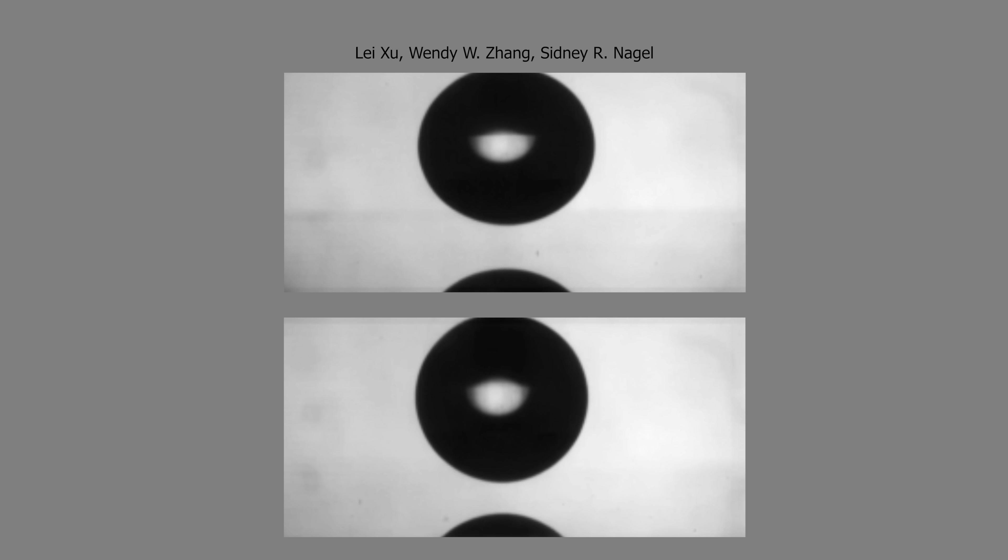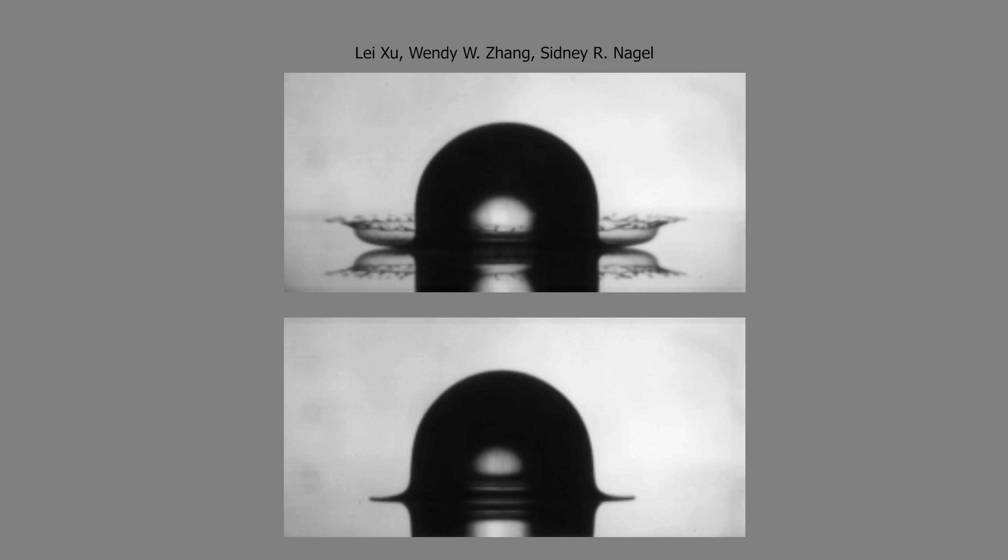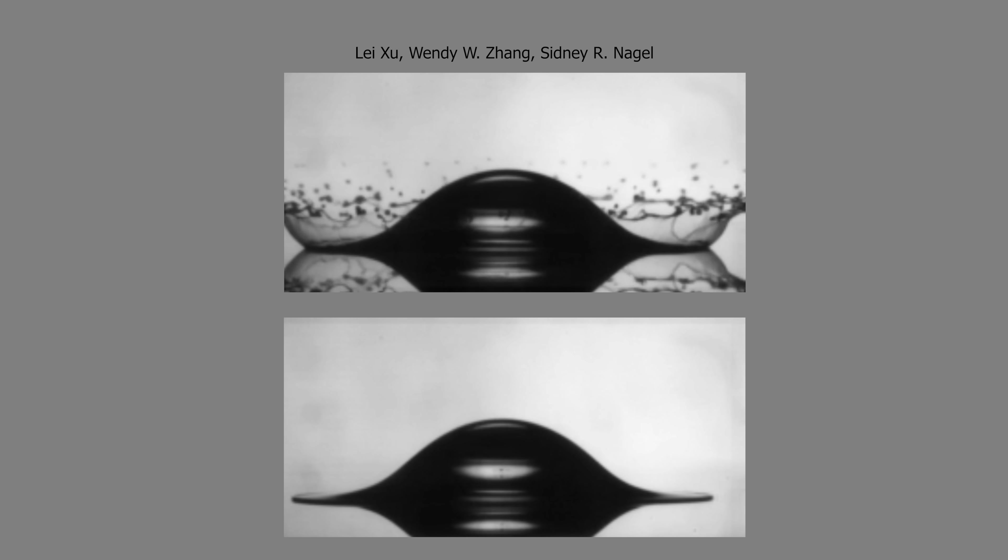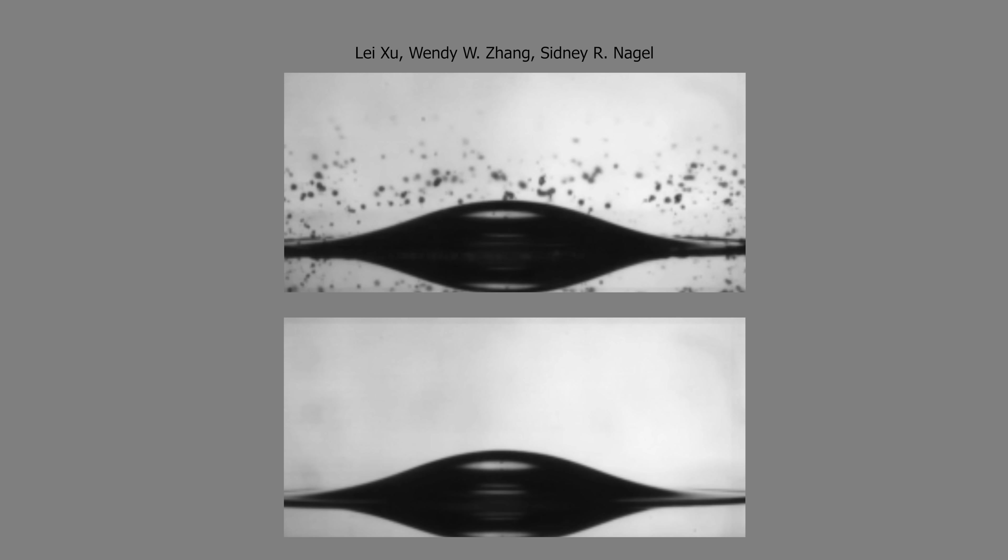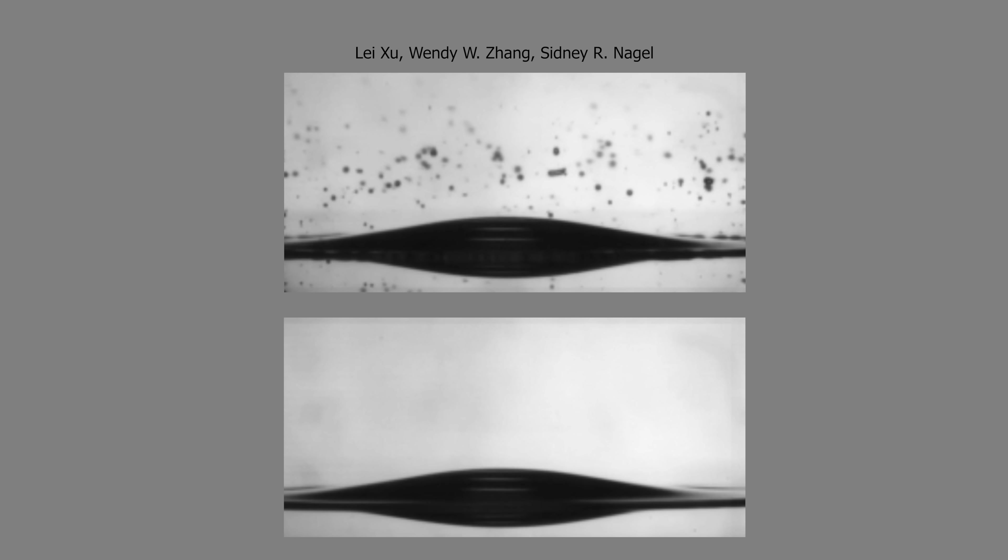But if you take away the air then you get no shockwave and no compressed air that flattens the splash out above the surface to throw the drops. So without air you just get the drop flattening out like a pancake. The rim of the droplet spreads smoothly and evenly outward. So splashing is not just a property of the liquid, it's a liquid gas interaction.